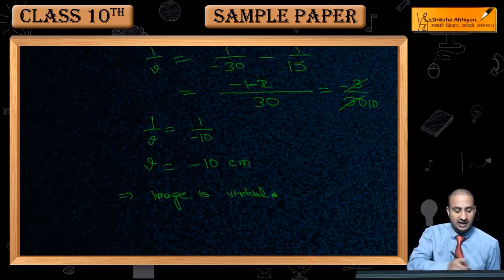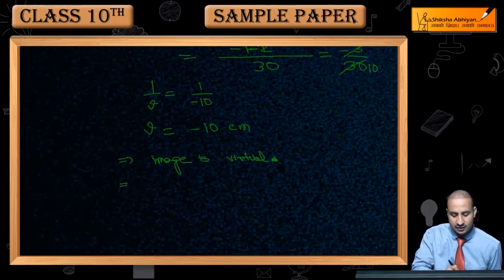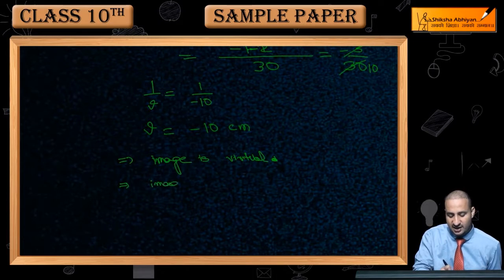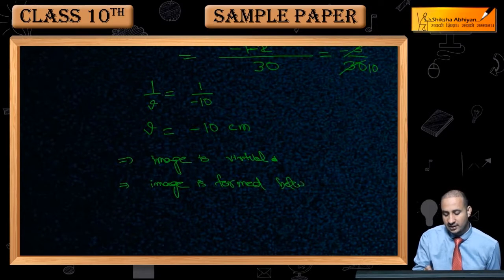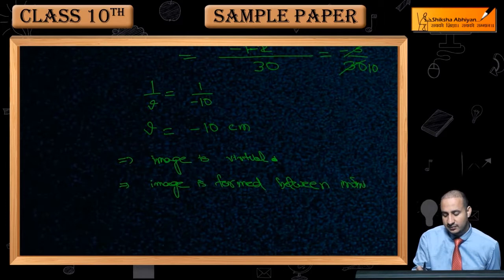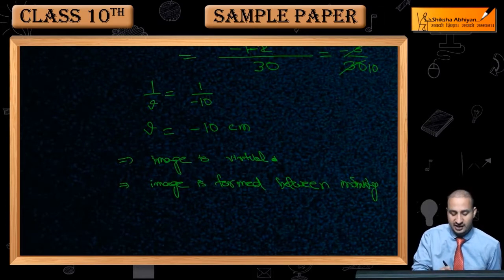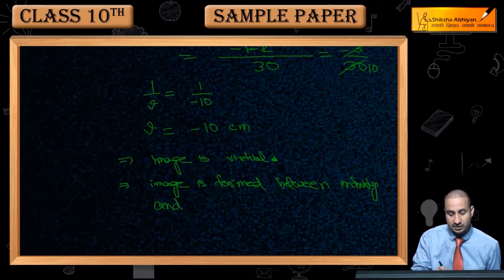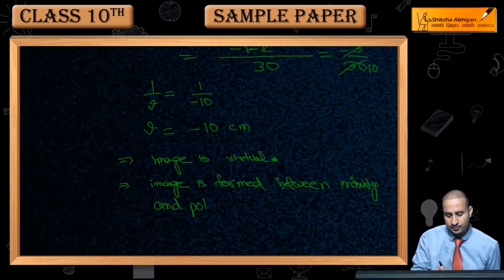If we see here, the image position is: image is formed between infinity and pole. Pole and infinity, between these two. Here you have optical center as well. Here the lens is, so here is optical center.